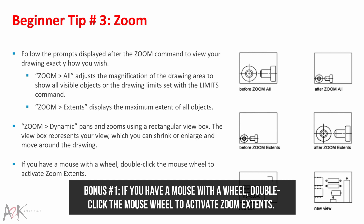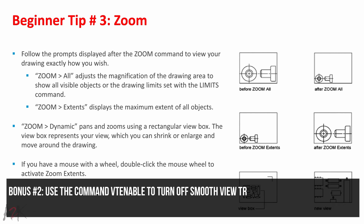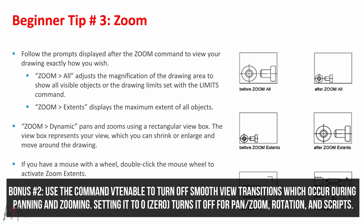Bonus 1: if you have a mouse with a wheel, double-click the mouse wheel to activate Zoom Extents. Bonus 2: use the command VTenable to turn off smooth view transitions which occur during panning and zooming. Setting it to 0 turns it off for pan, zoom, rotation and scripts.